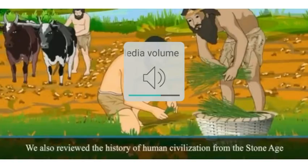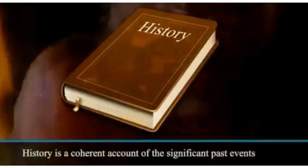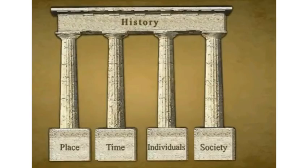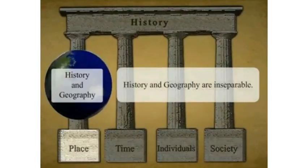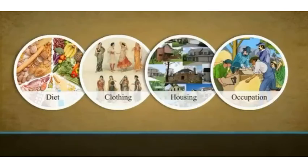We also reviewed the history of human civilization from the Stone Age to the agricultural civilization that flourished on the banks of rivers. History is the account of significant past events. In the process of human culture, time, place, society, and individuals are the four major pillars of history. We cannot write history without them. Of these four components, place is related to geography or geographical conditions.